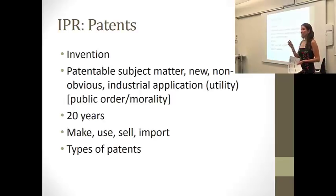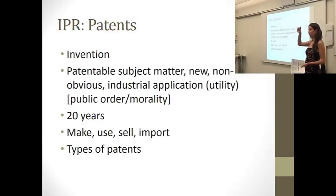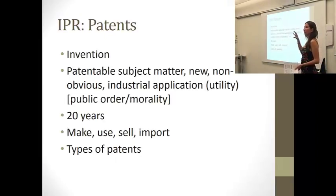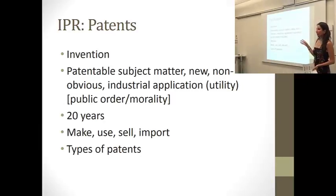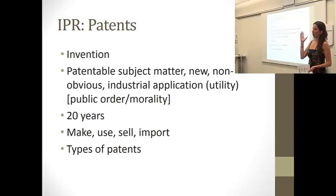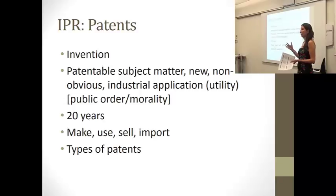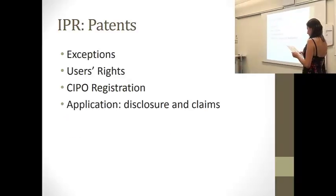For a drug, you could have a patent on the product itself, a patent on the composition of matter for the active ingredient, and a patent on improvements. For instance, if Advil is found to be useful not only for headaches but also for colds, then you have an improvement on your drug and therefore something additional to patent.